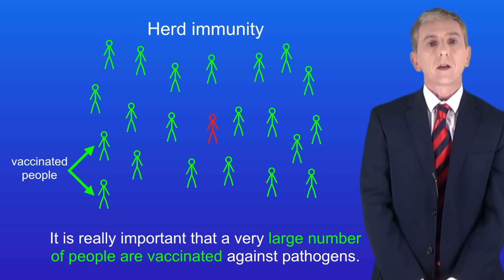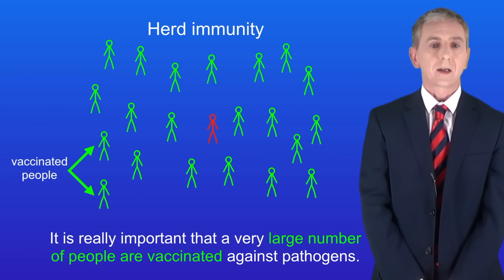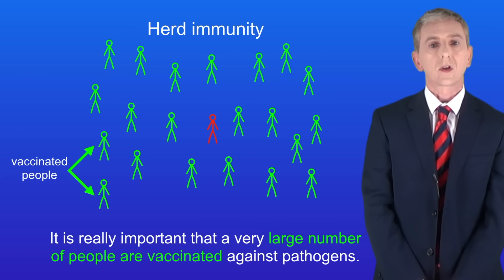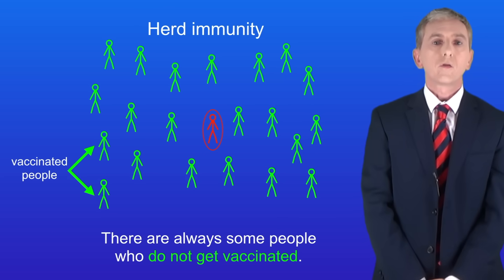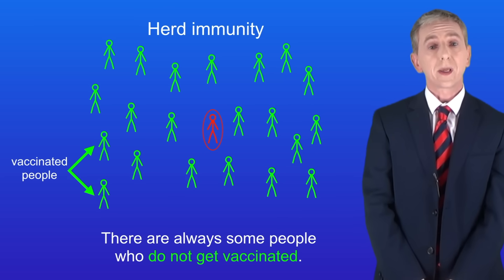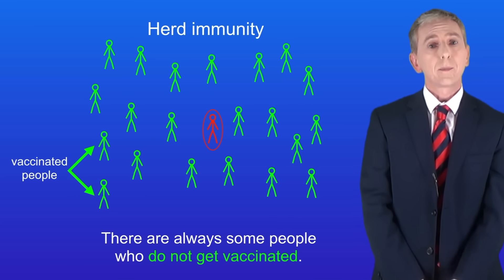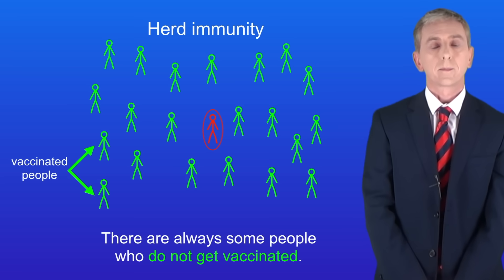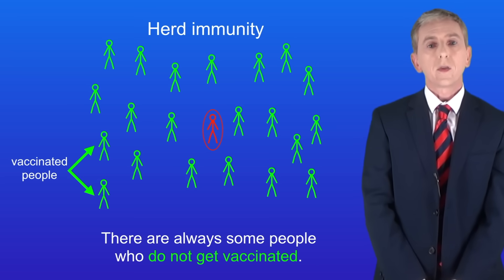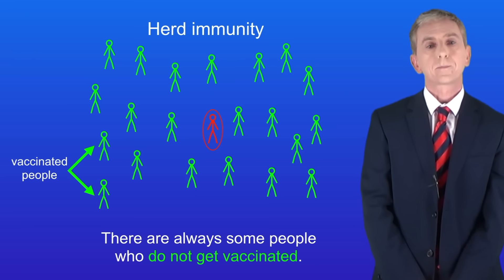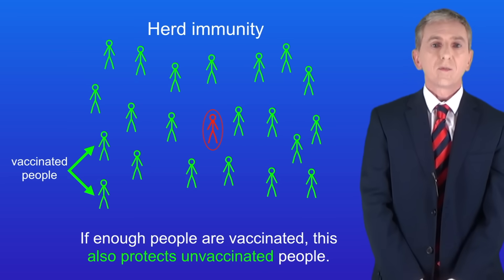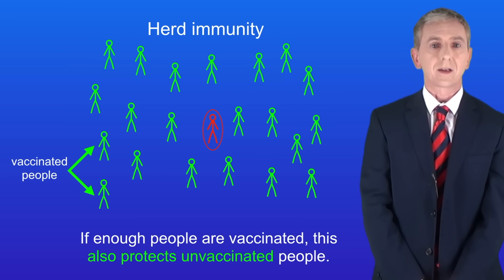It's really important that a very large number of people are vaccinated against pathogens — I'm showing vaccinated people in green here. There are always some people who do not get vaccinated, for example people who may be new to a country or people who missed a vaccination appointment — I'm showing the unvaccinated person in red. If enough people are vaccinated this also protects unvaccinated people.